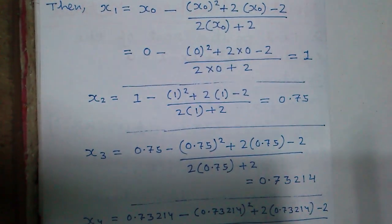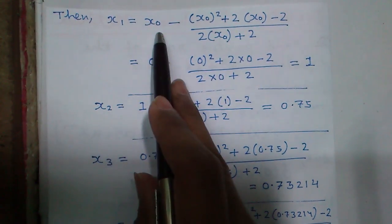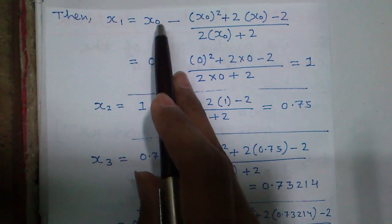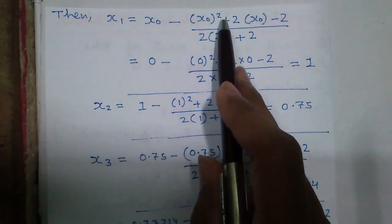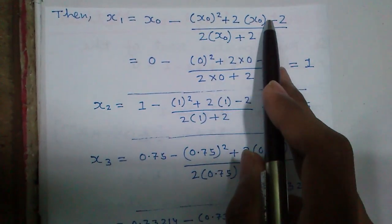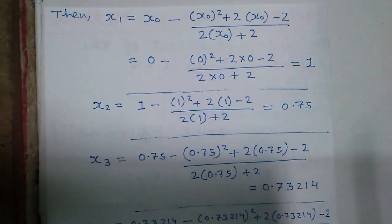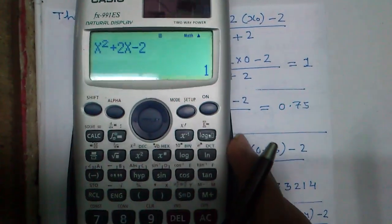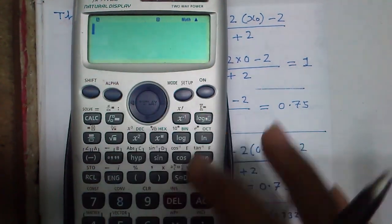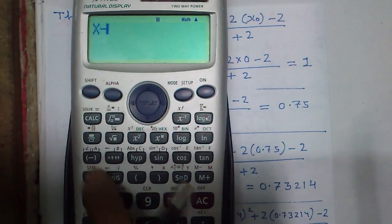By substituting x_n with x_0 we get x_{n+1} that is x_1 equals x_0 minus (x_0 whole square plus 2 times x_0 minus 2) divided by (2 times x_0 plus 2). So let's put it in calculator using x minus x.